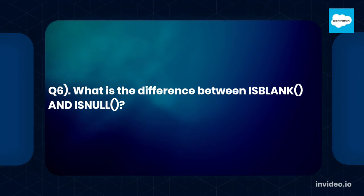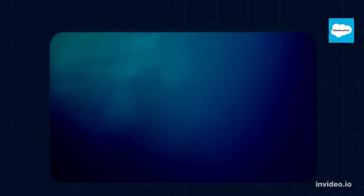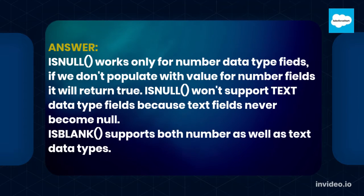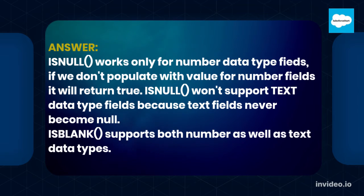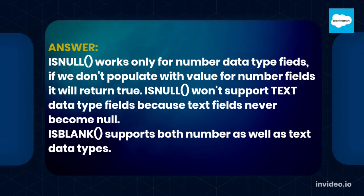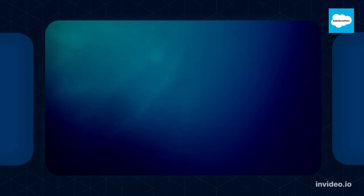Q6. What is the difference between ISNULL and ISBLANK? ISNULL works only for number data type fields. If we don't populate a value for number fields, it will return true. ISNULL won't support text data type fields because text fields never become null. ISBLANK supports both number as well as text data types.